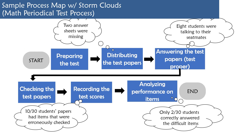Using the same process map, this time we integrate storm clouds. In the step of distributing the test paper, two answer sheets were missing. In the answering step, eight students were talking to their seatmate. In the recording step, 10 out of 30 students' papers had items that were erroneously checked. And only two out of 30 students correctly answered the difficult items. These are examples of storm clouds — specific, observable problems in the process.